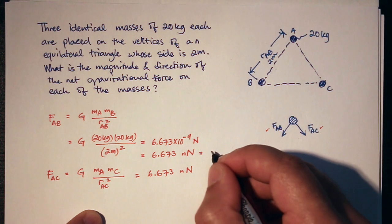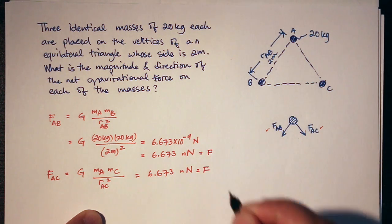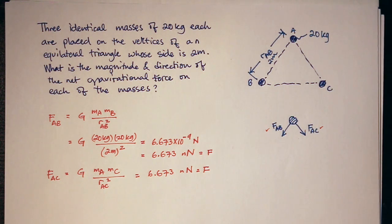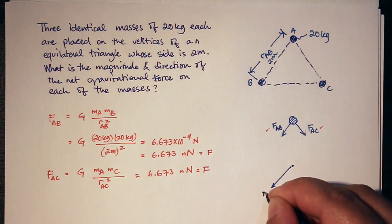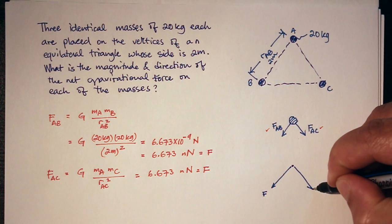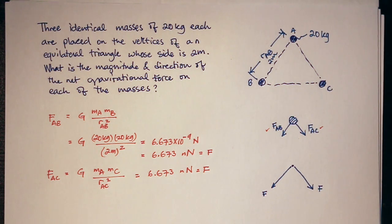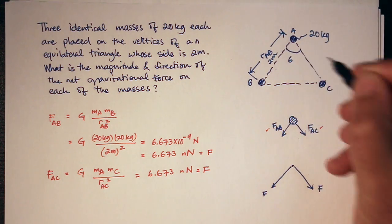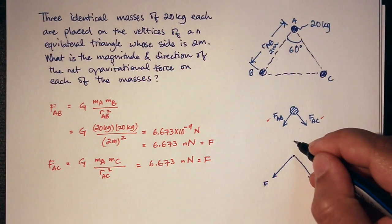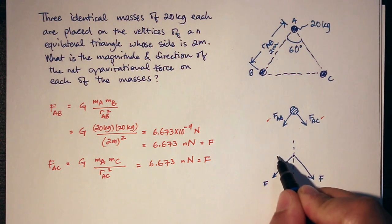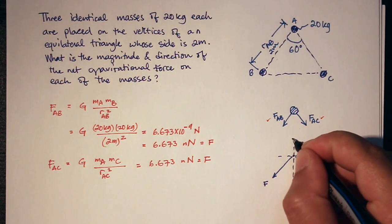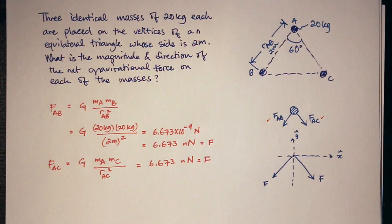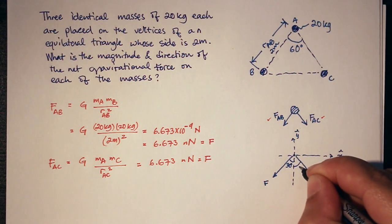Looking at the free body diagram of A, there are two forces acting on it. These forces F make a 60-degree angle between them, since this is an equilateral triangle. I'm going to choose my axes to be the one that bisects this angle and the one perpendicular to it — I'll call these X and Y. I'll look at the components of each of these forces in X and Y. Since the bisector splits the angle, it makes 30 degrees on each side.